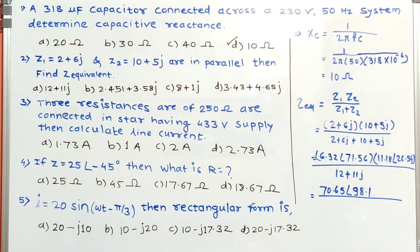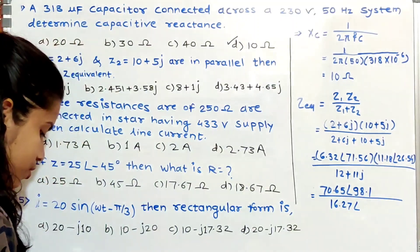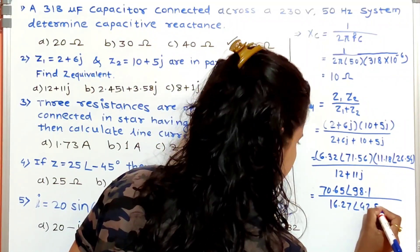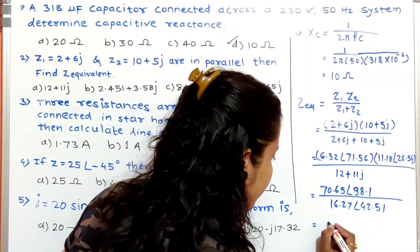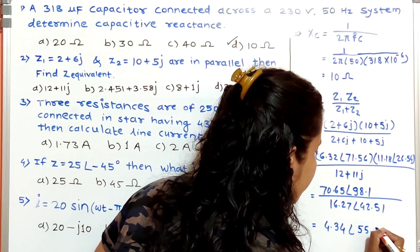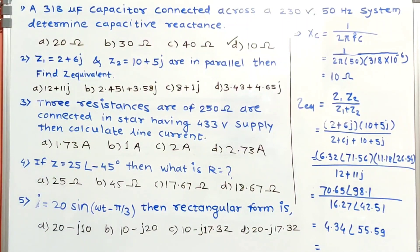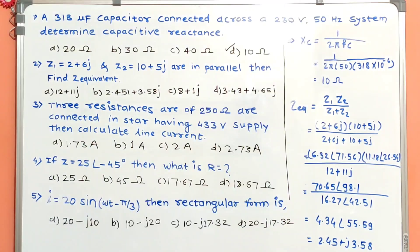For addition: 12 + 11j in rectangular form gives 16.27 at an angle of 42.51° in polar form. Dividing: 70.65 / 16.27 = 4.34, and subtracting angles: 98.1 − 42.51 = 55.59°. Converting back to rectangular form gives the answer 2.45 + j(...). The answer is option B.